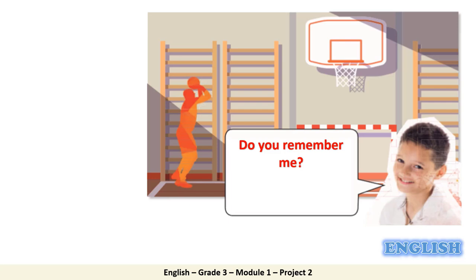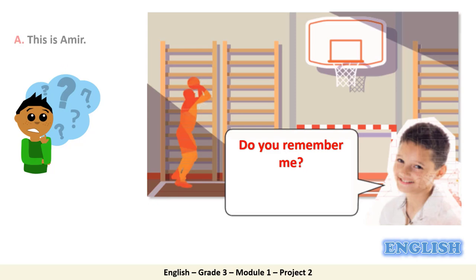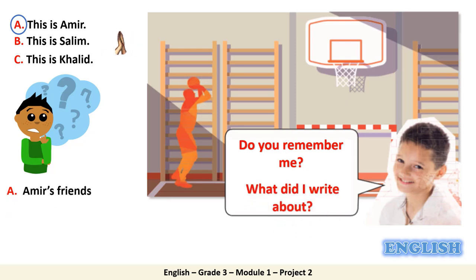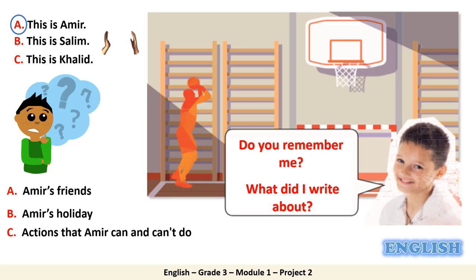Do you remember this boy from yesterday's lesson? Let me give you some choices. This is Amir, or this is Salim, or this is Khaled. Think about it. Excellent, this is Amir. What did he write about? Did he write about his friends, or about the holiday, or about the actions that he can and cannot do? Excellent, so he wrote about the actions that he can and cannot do, and today we will write a similar paragraph.